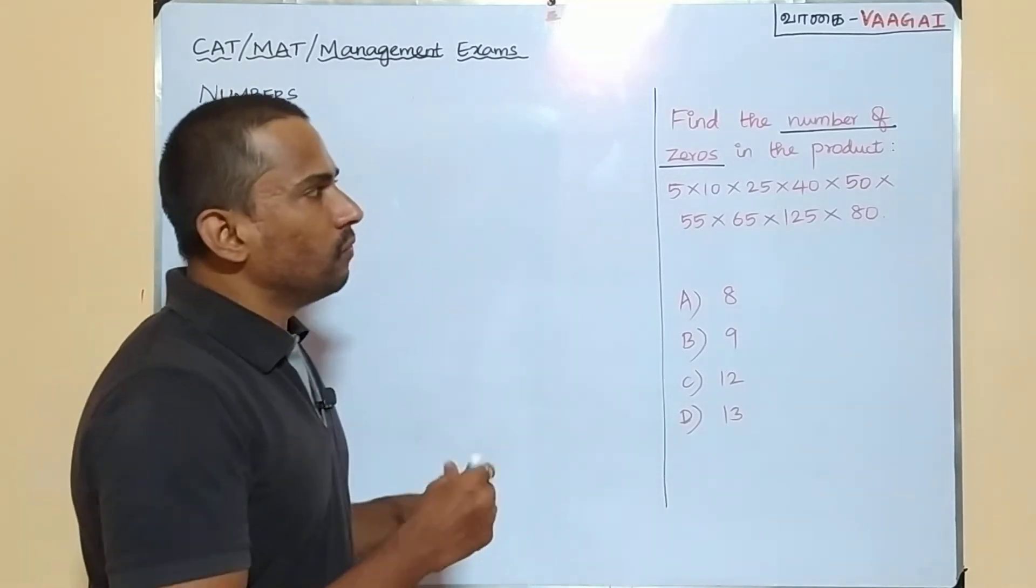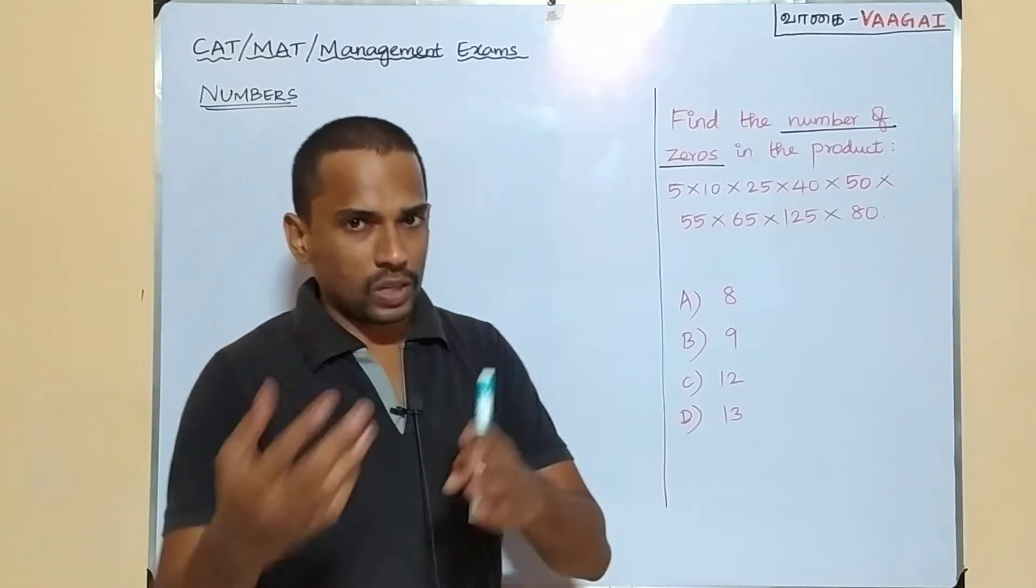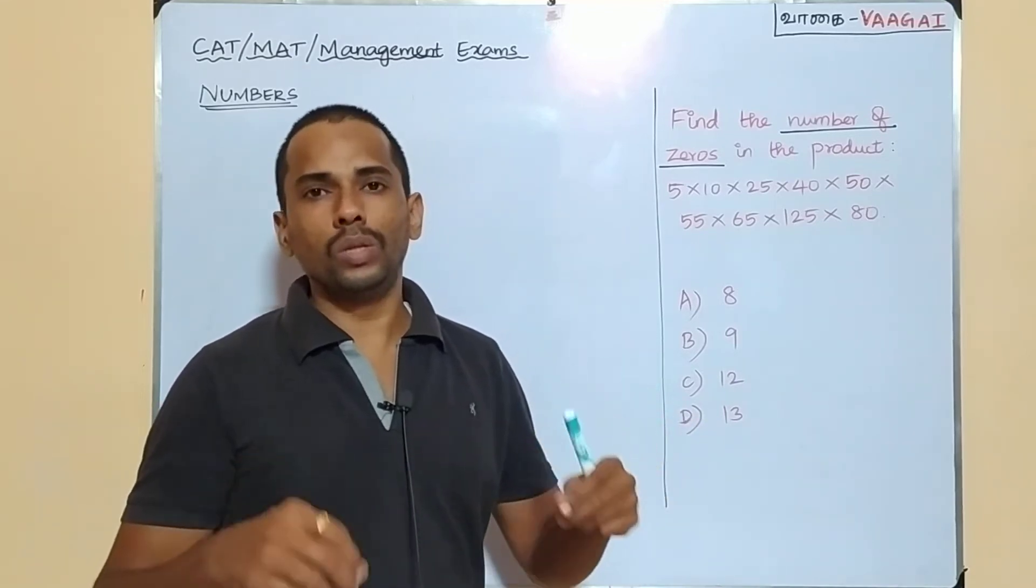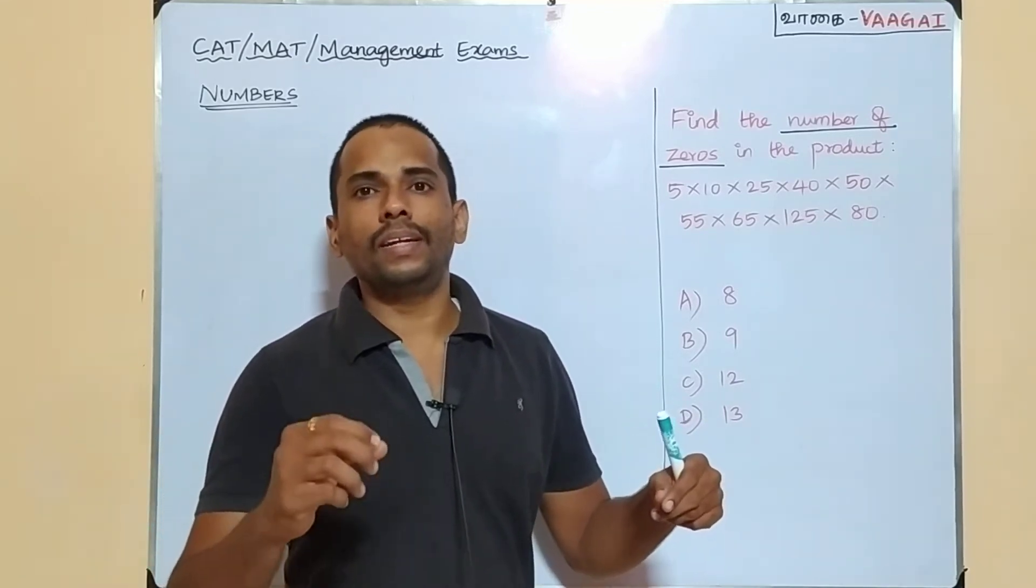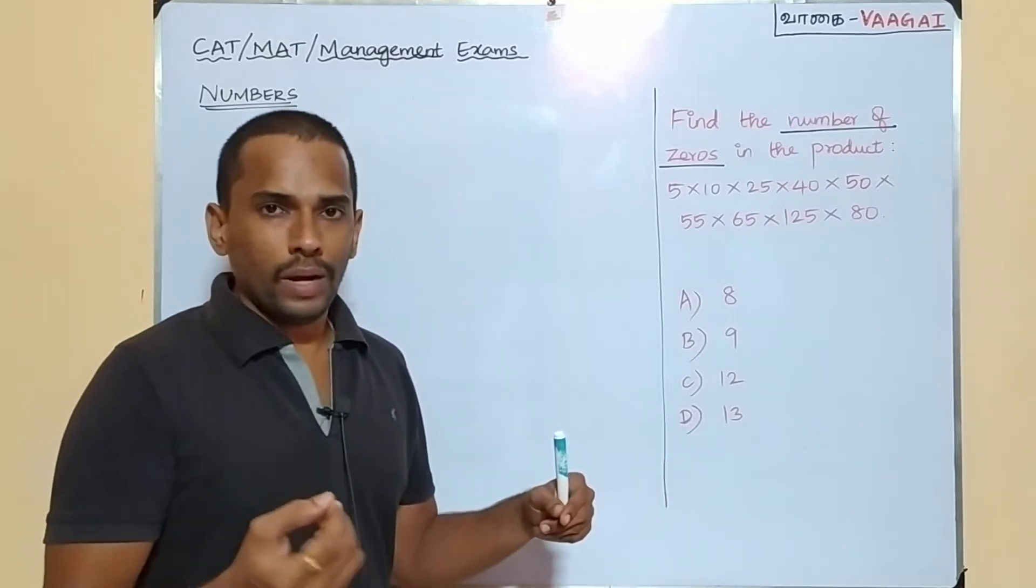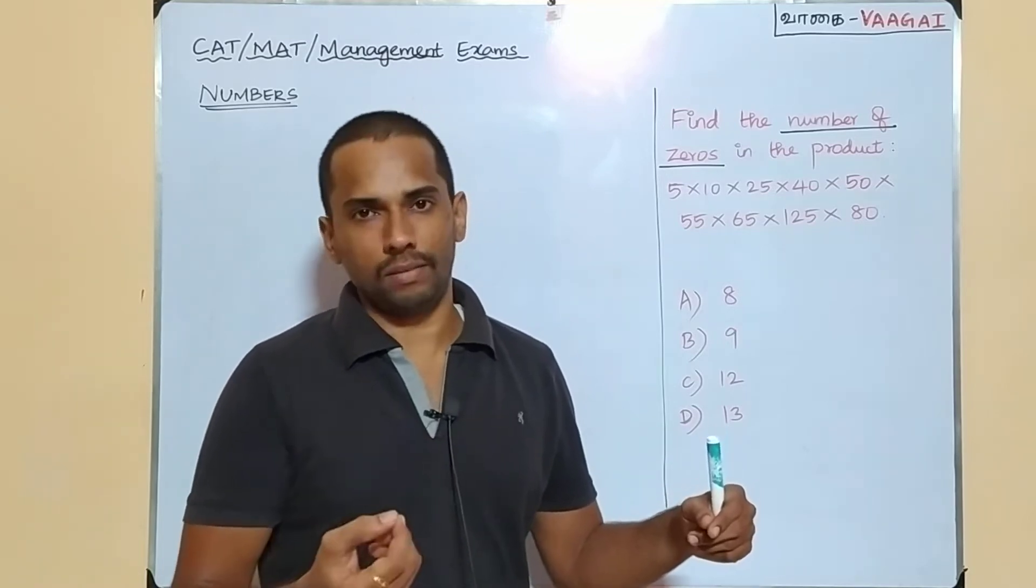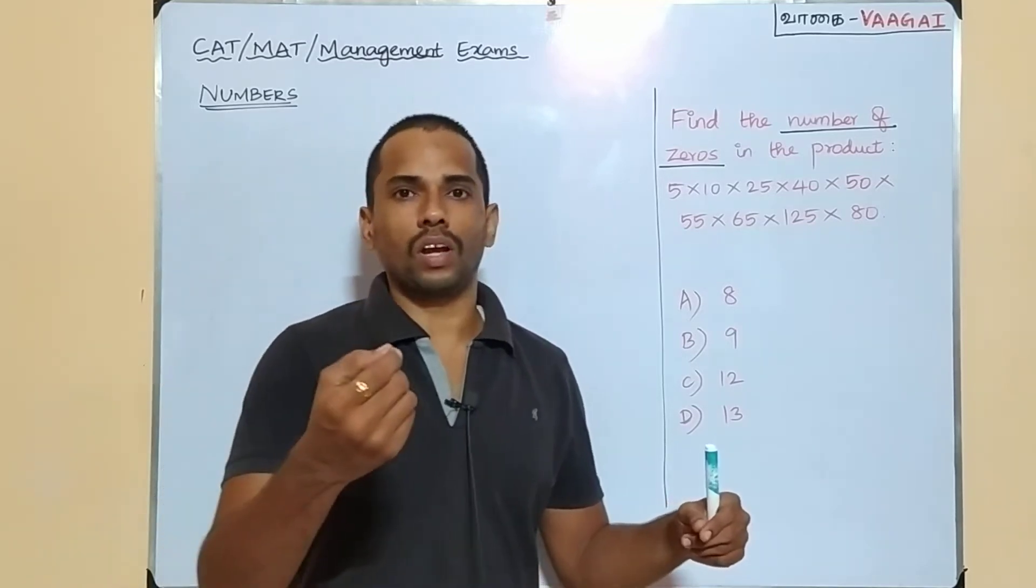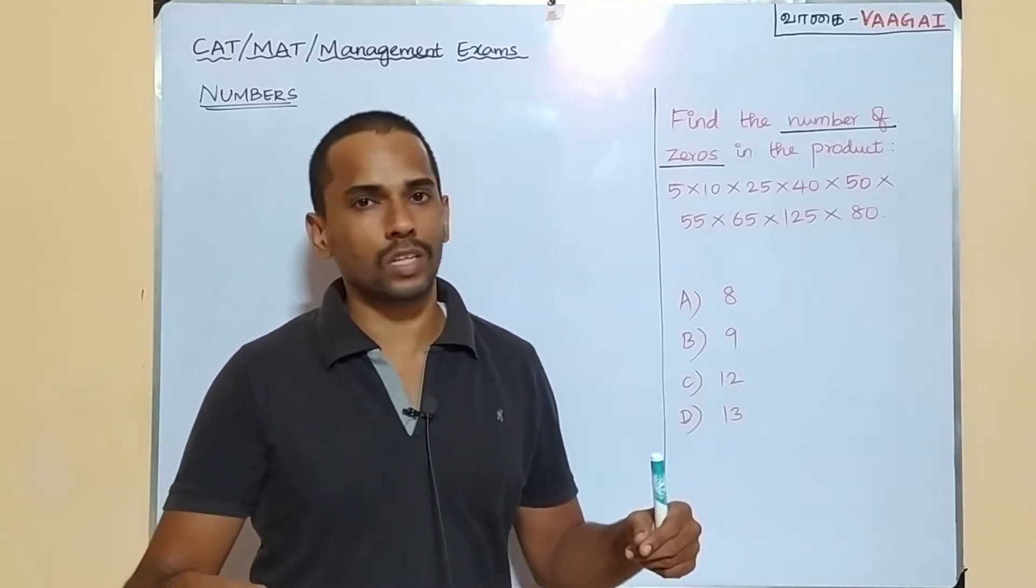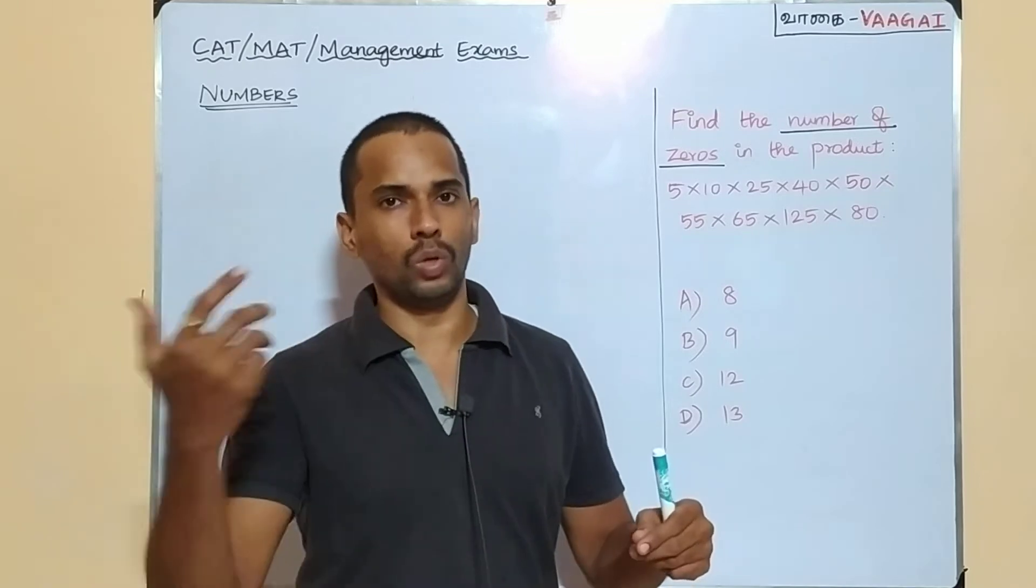So what we do there actually, whenever we need to find the number of zeros for a given factorial or for a given product, we will be collecting the tens, because each zero in our number represents 1 ten. For convenience, I will attach the link of those videos in the description box of this video, so that it will be easy for you to refer those videos.